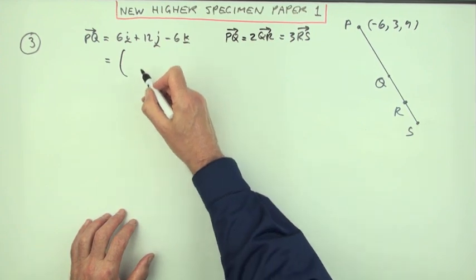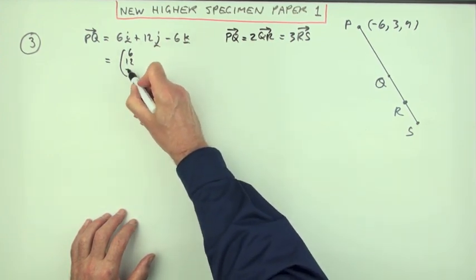So this says I'm going to go six steps forward, 12 steps along y, and then actually go down six steps. But you'd probably prefer in terms of a calculation to set it out in components, which would just be 6, 12, -6.